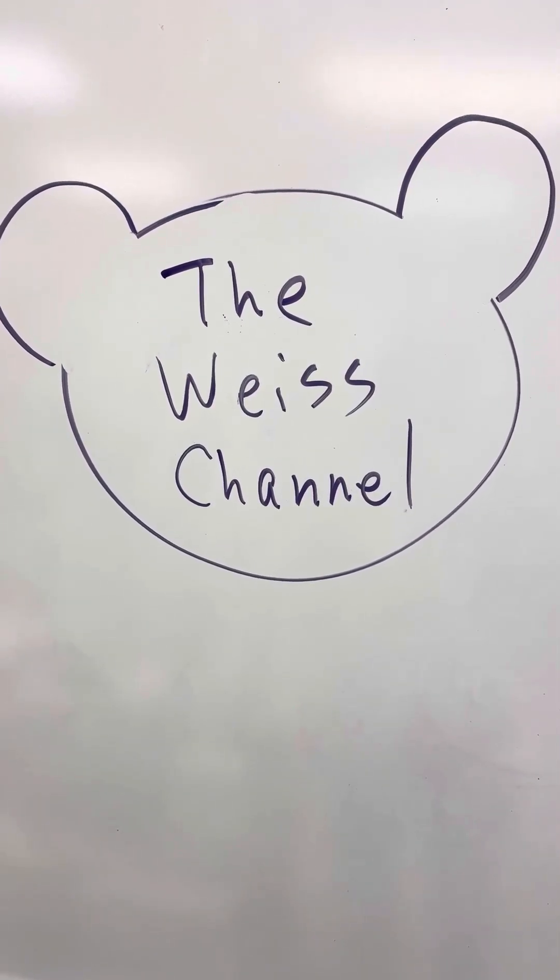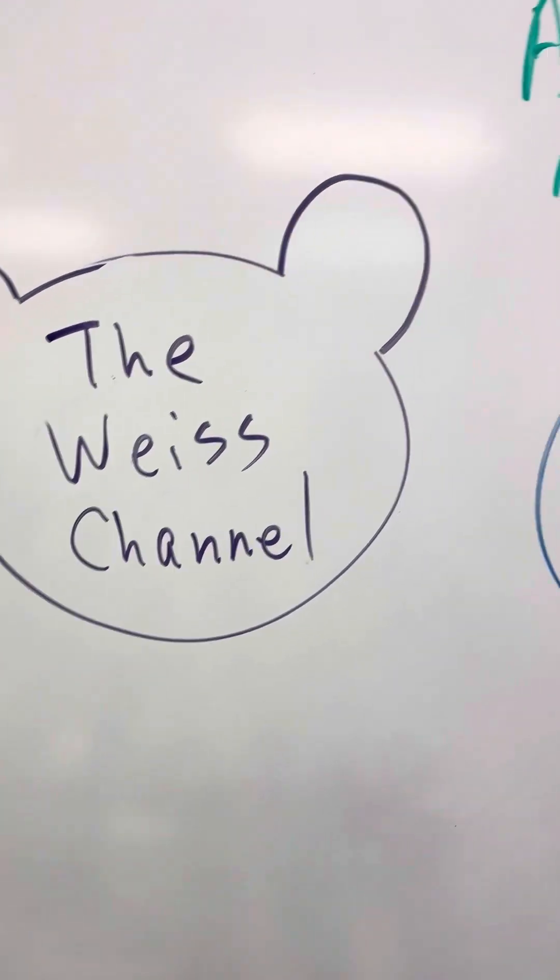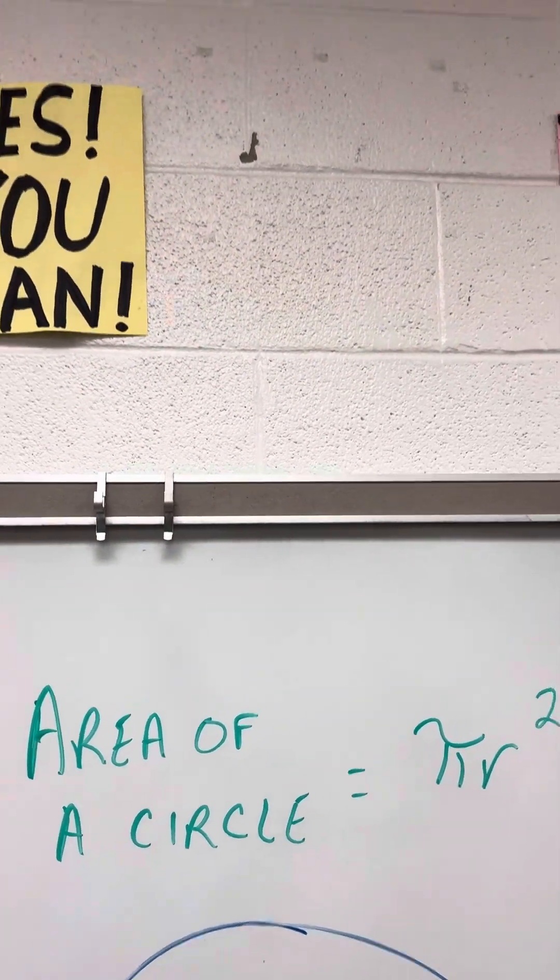We're going to involve the area of a circle. The area of a circle equals pi r squared.